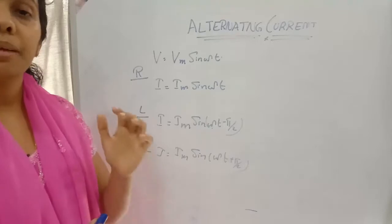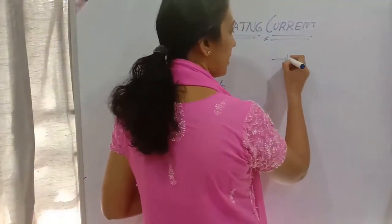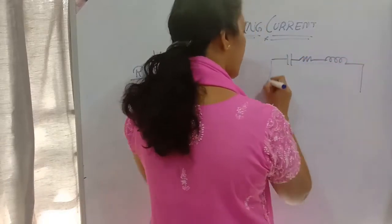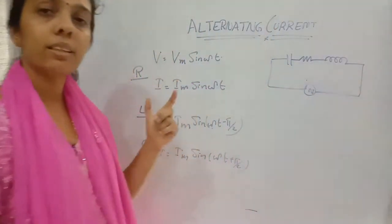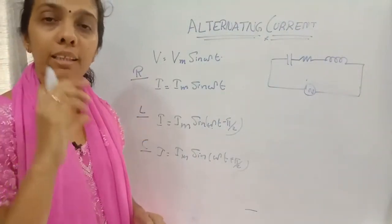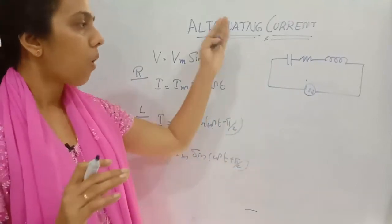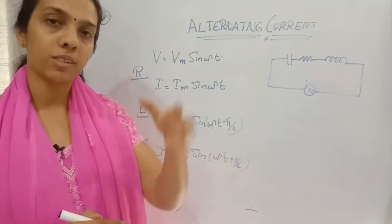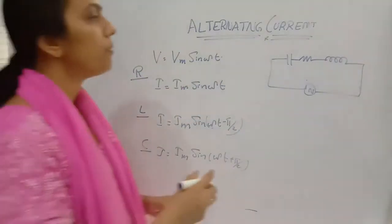Now, if all three — resistor, capacitor, and inductor — are in the same AC circuit, how will the variation happen? We already learned this in a previous detailed explanation. If you have any doubt in this derivation, you can go to the playlist 'Class 12 Alternating Current' — all the derivations are clearly explained there, and the link will be given in the description box of this video.